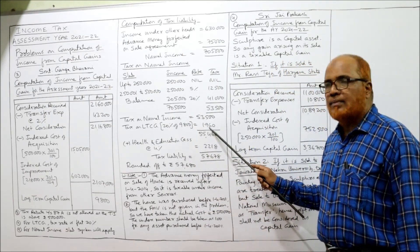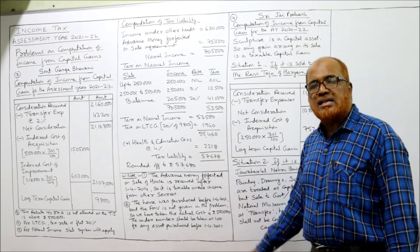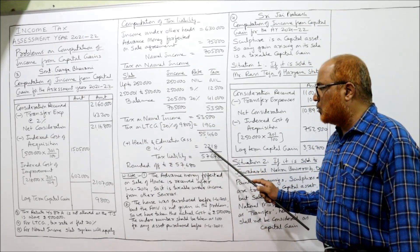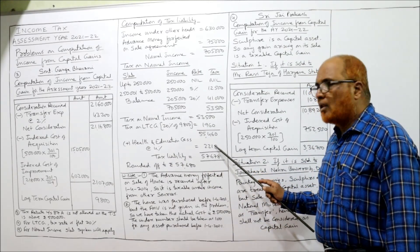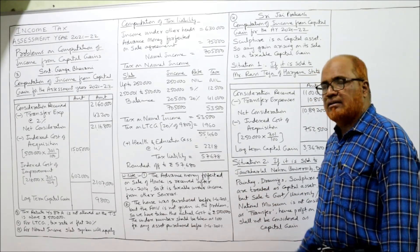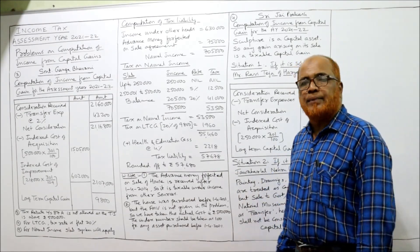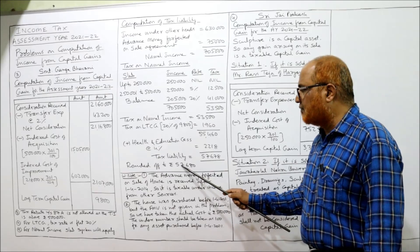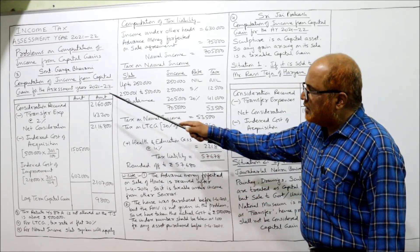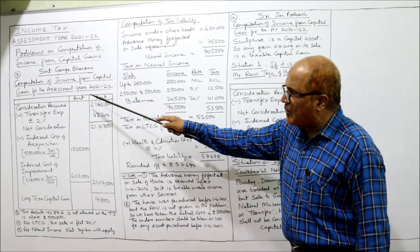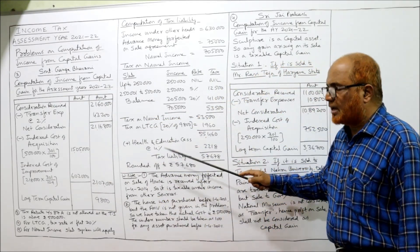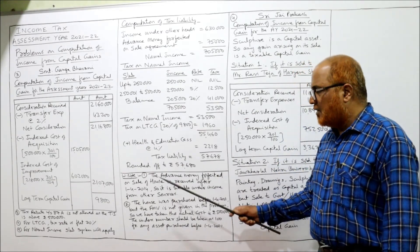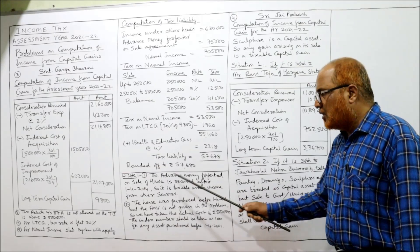Tax on LTCG: rupees 9,800 at flat 20% = rupees 1,960. Total tax = 53,500 + 1,960 = rupees 55,460. Health and Education Cess at 4% of 55,460 = rupees 2,218. Grand total = 55,460 + 2,218 = rupees 57,678. Rounded off to the nearest 10 = rupees 57,680. This completes the computation of LTCG and tax liability for Problem 3.